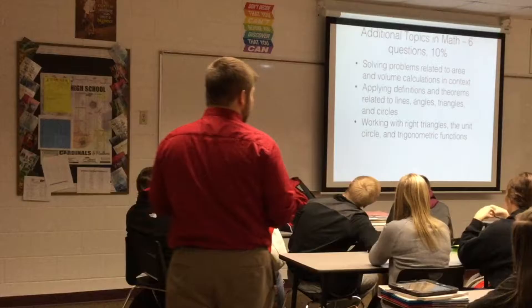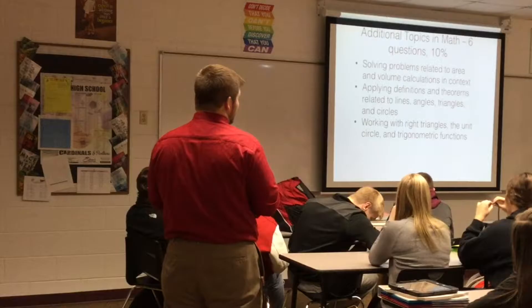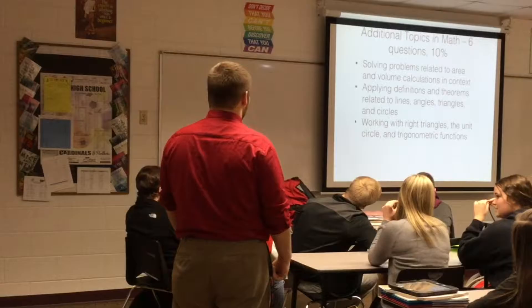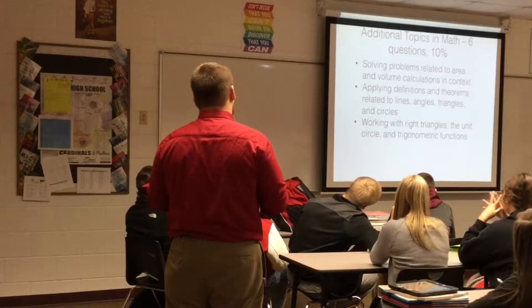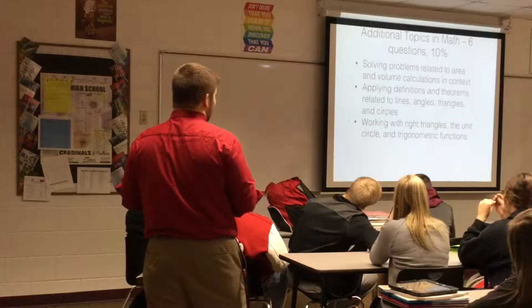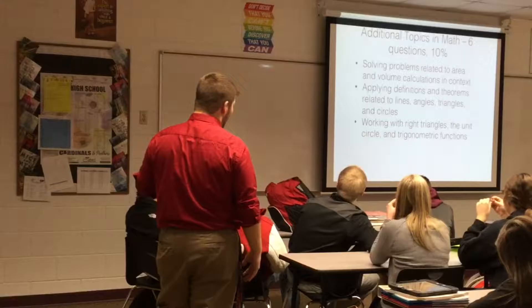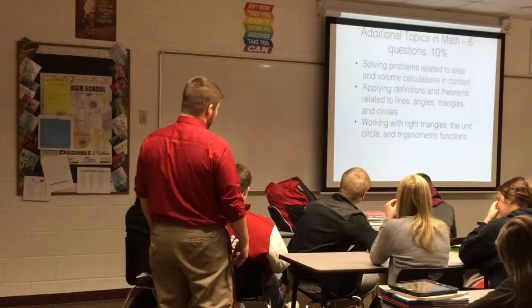Additional Topics of Math is 6 questions at 10%. This is miscellaneous content — a couple of trig questions, angles, triangles, circles, and volume. They give you all the volume formulas, like for a sphere, cube, or rectangular prism. They also give you area formulas for triangles and similar shapes, so you don't need to memorize those. But as a general rule, they give you things you don't really need, and what you do need, they don't give you.